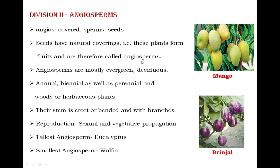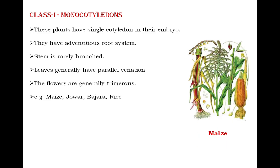Now we will see the two classes of division Angiosperm: Monocots and Dicots. The first class is Monocotyledons — 'mono' means single, so plants whose seeds bear a single cotyledon are called Monocotyledonous plants. Monocots have an adventitious root system — fibrous-like roots that together form an adventitious root system, as seen in maize.